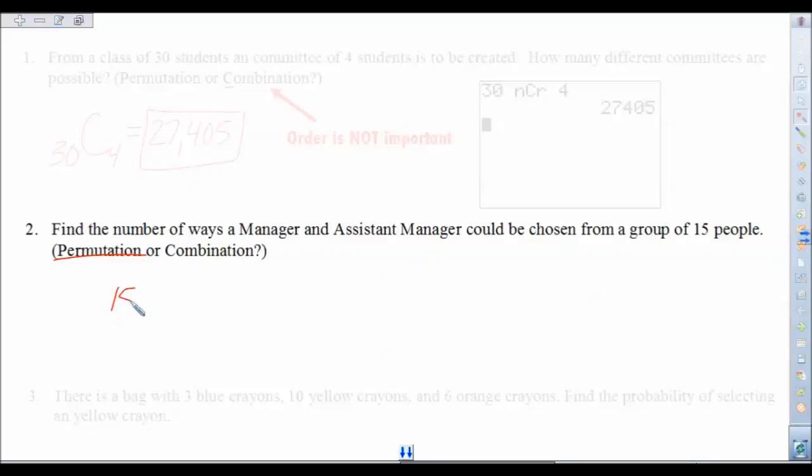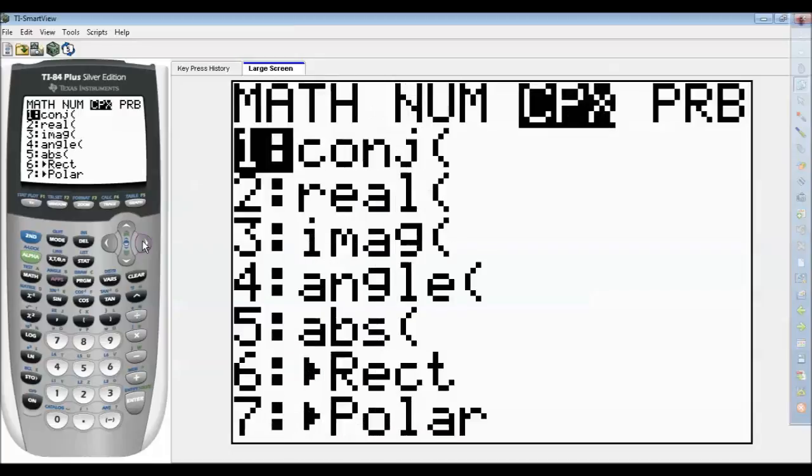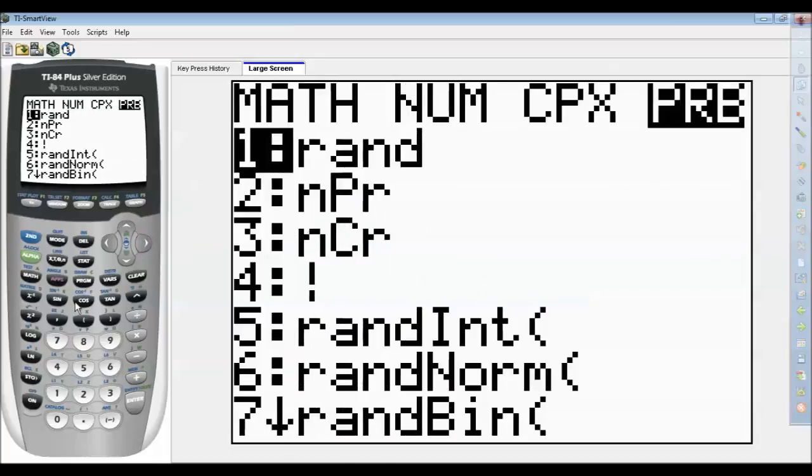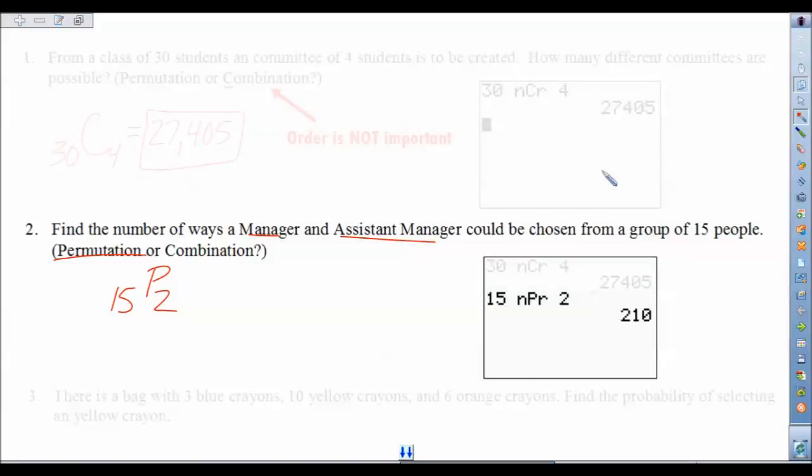So taking a page from the last problem we saw here, put the bigger number there, 15, we're doing a permutation, and out of those, how many people are we picking here? One, two. So two people there. Fire up that calculator. So this time, out of 15 people, the math button again, over to probability. Now we want the NPR. And choose two. There we have it, 210. Let's just go ahead and give that our final answer there. 210 different ways that we could select those two people.